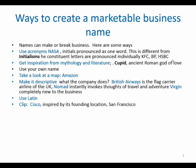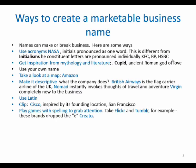Also, you can play games with spelling to grab attention. This is a very important technique. For example, Flickr and Tumblr — the 'E' in these words is deleted. And in a company named Credo, the 'E' is replaced by 'O.' So you are playing games with spelling, and this is a very attractive and really important form of business naming.